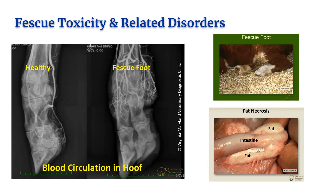Acute fescue toxicosis is experienced by only a portion of horses. It is the most harmful to third trimester broodmares. Broodmares who graze infected tall fescue during the last third of pregnancy experience agalactia or lack of milk production, retained and/or thickened placenta, breathing difficulty or dystocia, prolonged pregnancy, and even death. There is currently no easy cure for acute fescue toxicosis or its symptoms, so reducing the intake of toxic tall fescue is key.